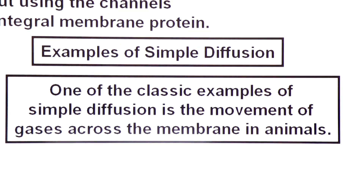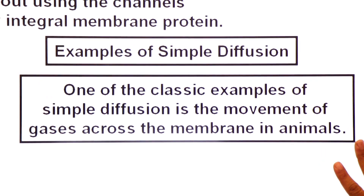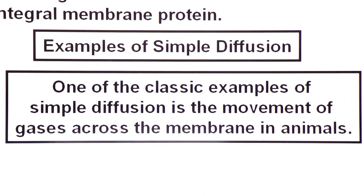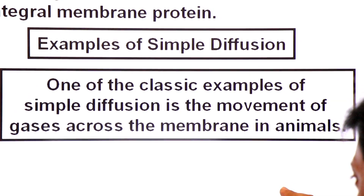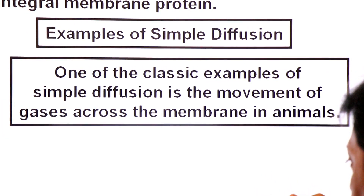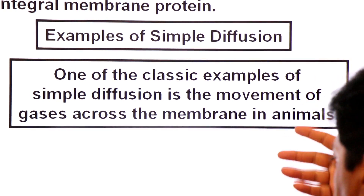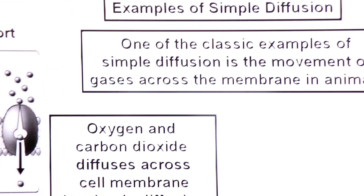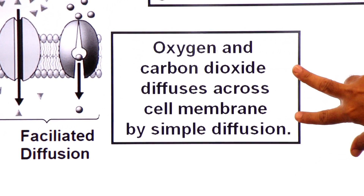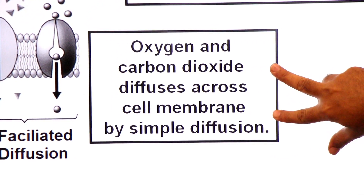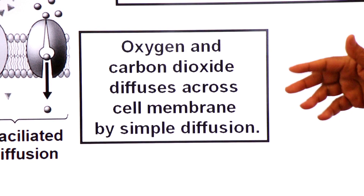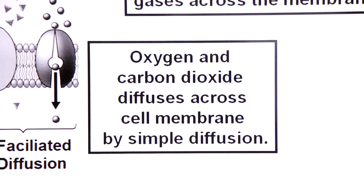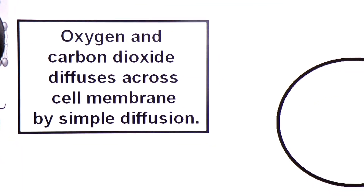One of the classic examples of simple diffusion is the movement of gases across the membrane in animal cells. During respiration, oxygen enters and carbon dioxide exits the cell. Oxygen and carbon dioxide diffuse across the cell membrane by a process of simple diffusion, without using any channel protein.